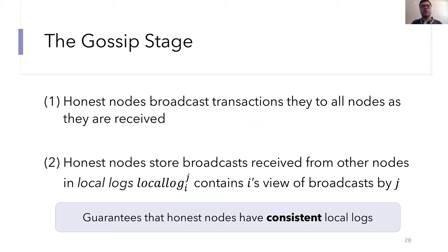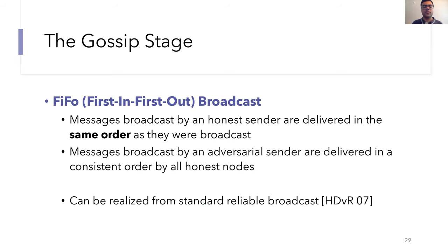So the first stage that a transaction goes through is the gossip stage. In this stage, honest nodes broadcast transactions to all of the other nodes in the order that they were received. And at the same time, nodes process the broadcast received from others and store them in local logs. So local log subscript i superscript j contains node i's view of how the transactions were received by node j. At the end of this stage, we want to guarantee that these local logs are consistent. Basically, two honest nodes should not have different views of the broadcasts by another node.